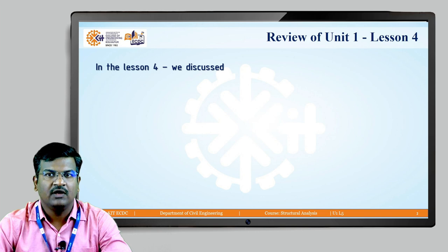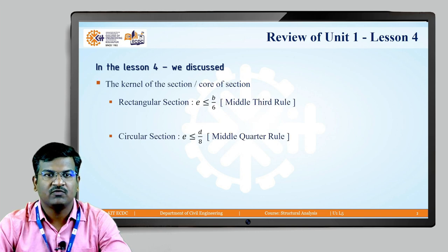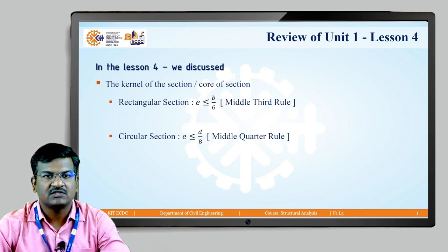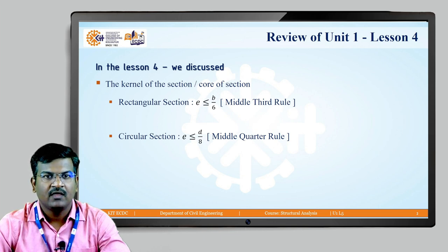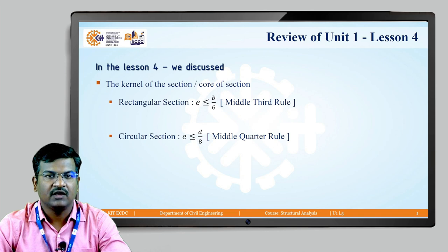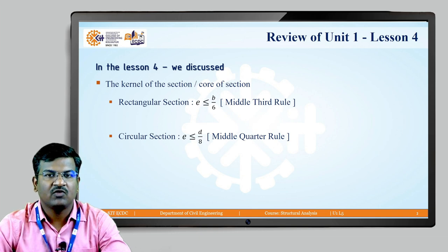Before that, let us recall Lesson 4. In Lesson 4 we discussed the kernel or core of the section for two types of sections: rectangular and circular. For the rectangular section, eccentricity is less than or equal to B/6 on both axes — called the middle third rule. For the circular section, eccentricity is less than or equal to D/8 — called the middle quarter rule.